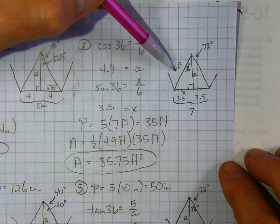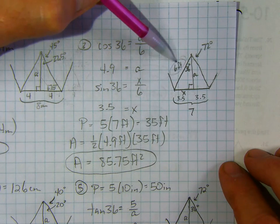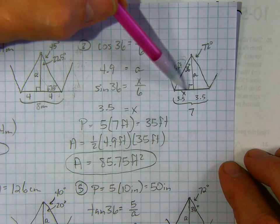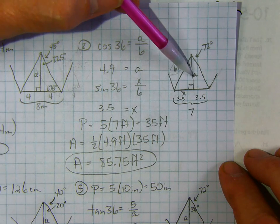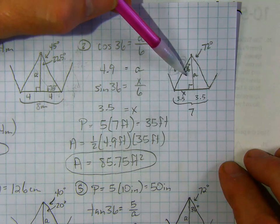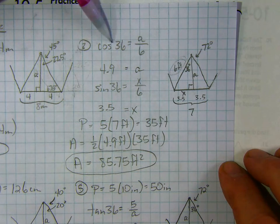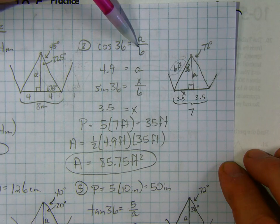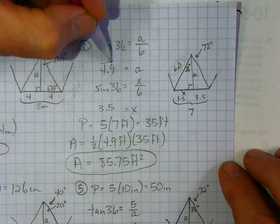All right, since the radius is 6, I have to find the apothem, and I'm going to have to find the side so I can get the perimeter. So first, I'll find the apothem. Using 36, I can say the cosine of 36 is the adjacent over the hypotenuse. The adjacent a over the hypotenuse 6. And so the apothem comes out to be 4.9.